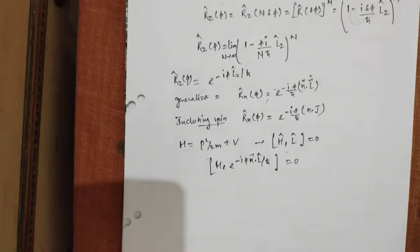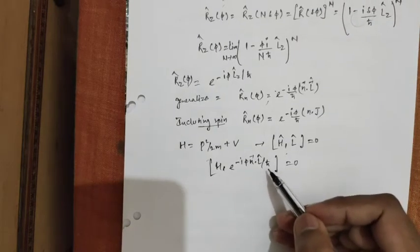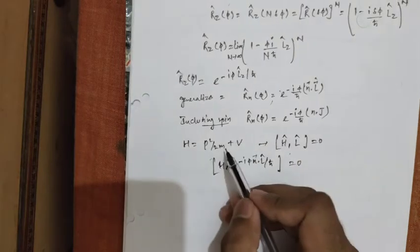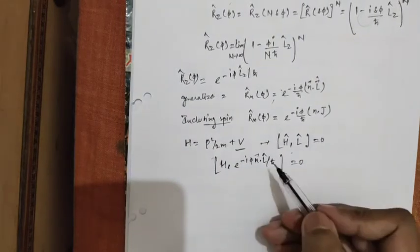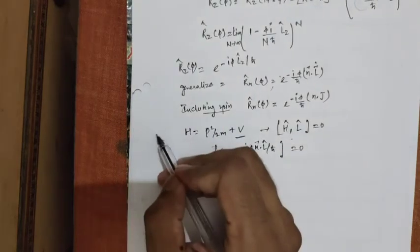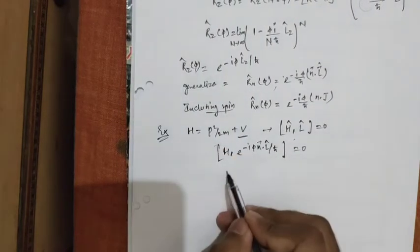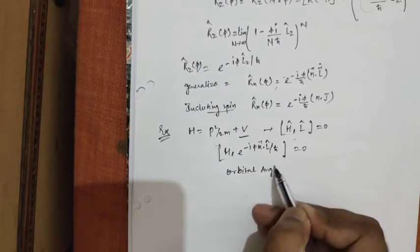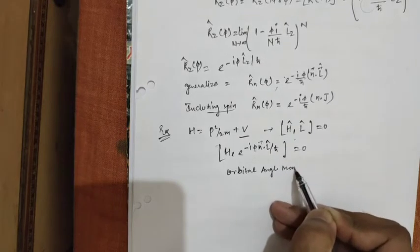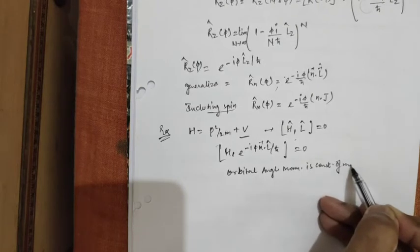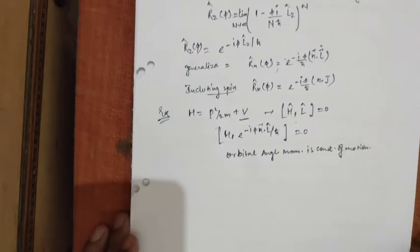Due to this symmetry of space isotropy or rotational invariance, the orbital angular momentum L is conserved. So, in this case, particle moving under a central potential, the orbital angular momentum is a constant of motion.